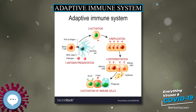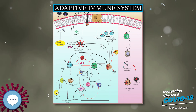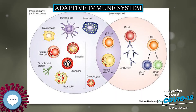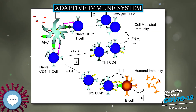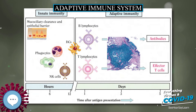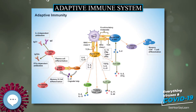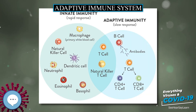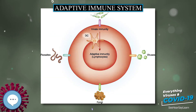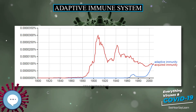B cells are the major cells involved in the creation of antibodies that circulate in blood plasma and lymph, known as humoral immunity. Antibodies, also known as immunoglobulin (Ig), are large Y-shaped proteins used by the immune system to identify and neutralize foreign objects. In mammals, there are five types of antibodies, differing in biological properties, each having evolved to handle different kinds of antigens. Upon activation, B cells produce antibodies, each of which recognizes a unique antigen and neutralizes specific pathogens.